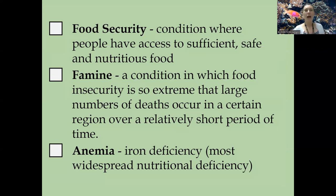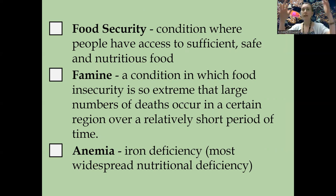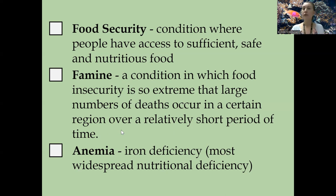A couple more definitions when we're talking about nutrition. Food security means somebody who's properly nourished — you have access to sufficient, safe, and nutritious food. The flip side is living in a food desert, where there's not enough access to fresh fruits and vegetables within a certain mile radius. A famine is a condition where food insecurity is so extreme it's affecting not just one individual or family, but an entire area or civilization, leading to large numbers of deaths due to undernutrition or malnourishment.